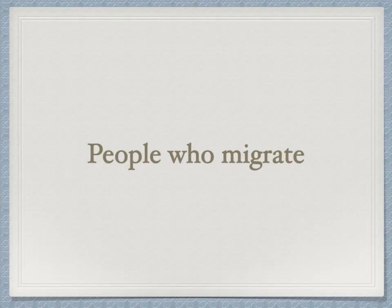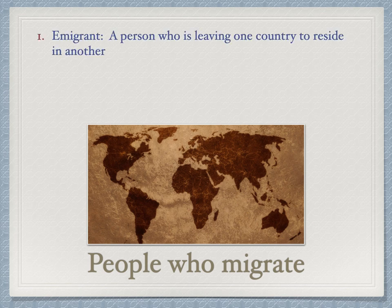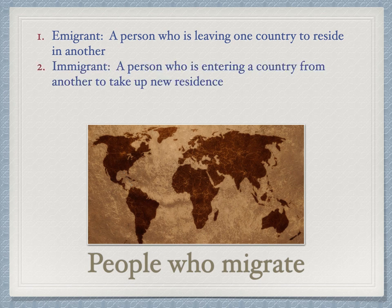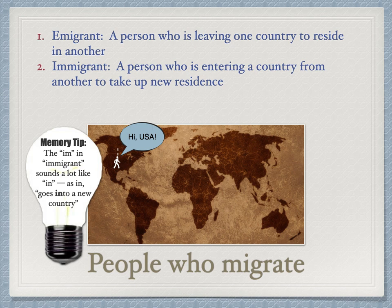An emigrant is a person leaving one country to reside in another — for example, leaving the U.S. and moving to South America. An immigrant, spelled with an I and an extra M, is a person entering a country from another to take up new residence, like someone moving from Canada to the USA. Memory tip: the M in immigrant sounds like 'in' — an immigrant is coming in, an emigrant is going out.